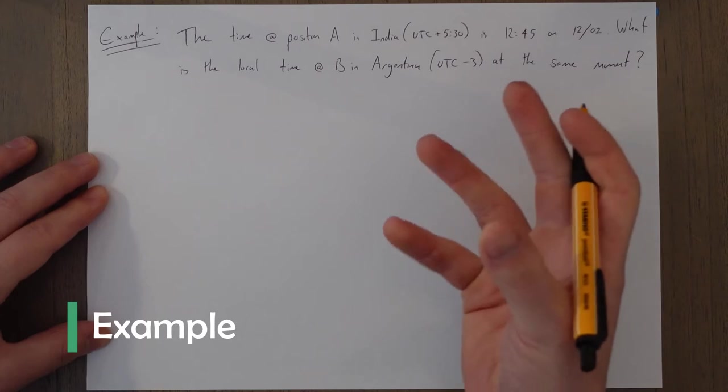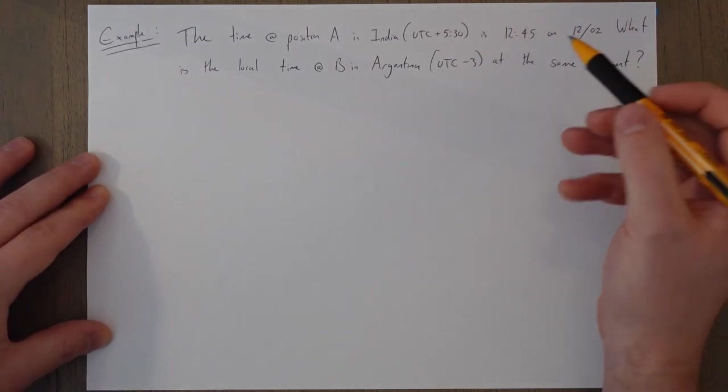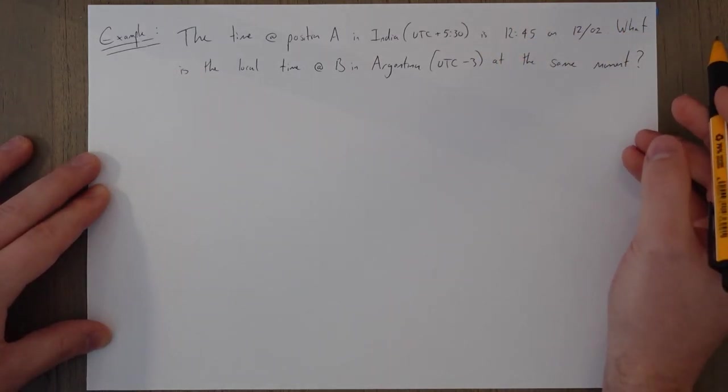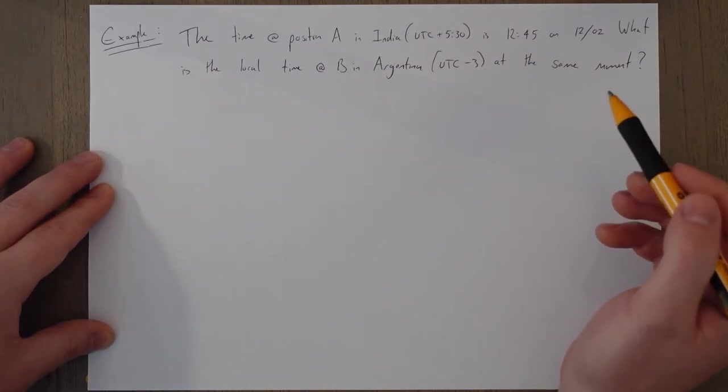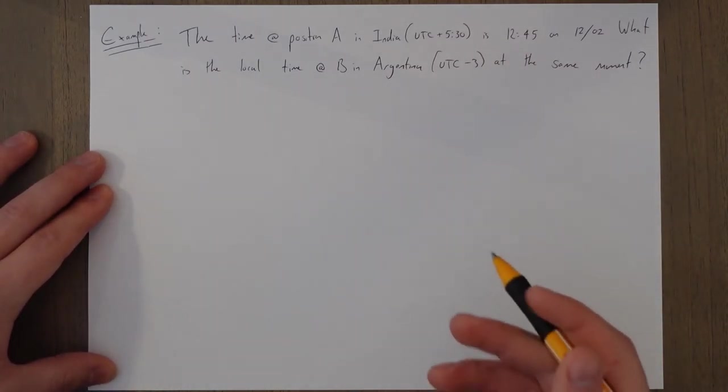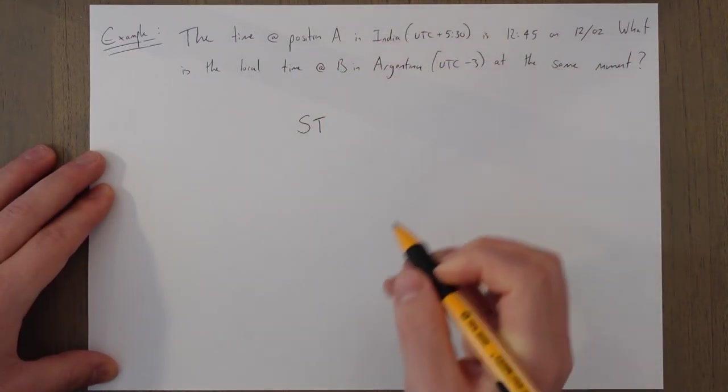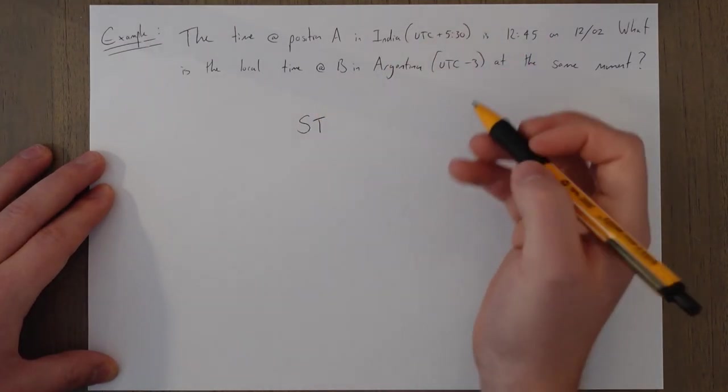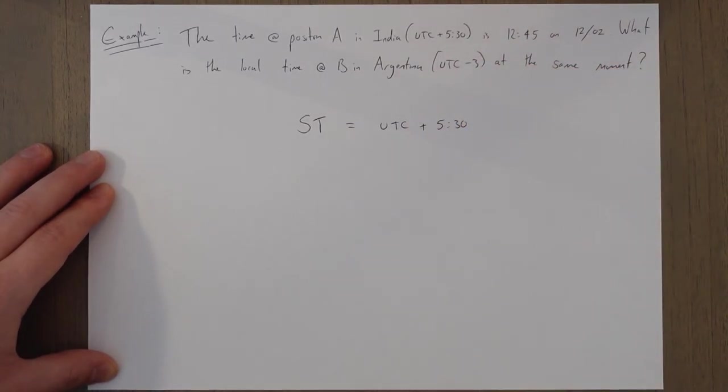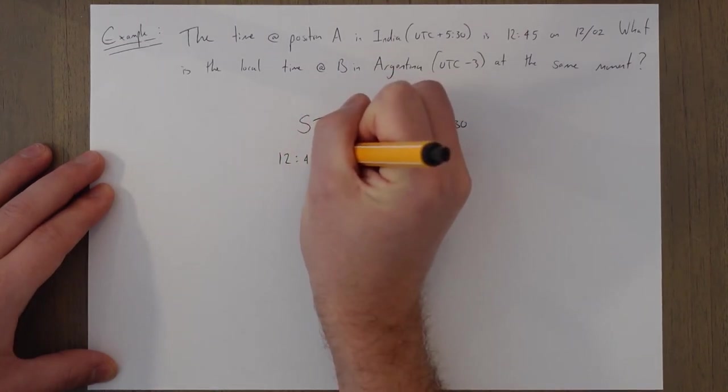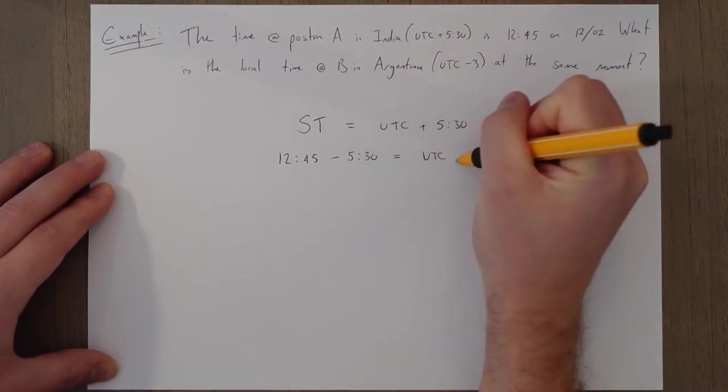So an example of how to use Zulu time to help with some questions would be: The time at position A in India with a time zone of UTC plus 5.5 hours is 12:45 on the 12th of February. What is the local time at point B in Argentina with a time zone UTC minus 3 at the exact same moment? So the first point is to convert into UTC or Zulu time. So the standard time in India, we're using the time zone, not the local meridian time, is UTC plus 5.5 hours. And that time is 12:45.